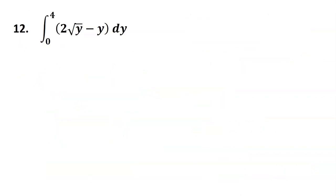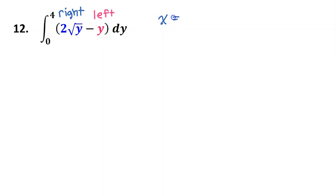Let's do the same thing for number 12. Notice that for this problem, we are integrating with respect to y. So when we talk about integrating from 0 to 4, this is vertical — these are y values. When we integrate with respect to y, the area between the curves will be the right curve minus the left curve. So the right curve must be x equals 2 radical y, and the left curve must be x equals y.